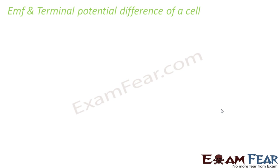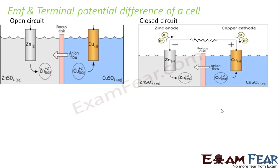Let us now look at the difference between EMF and terminal potential difference. As mentioned, whenever we talk of the term EMF it is always related to the open circuit — that means when there is no current drawn from the cell. When there is a closed circuit, meaning a current is flowing through the circuit, the cell is connected and current is flowing, and that potential difference between the two ends is known as the terminal potential difference of a cell.